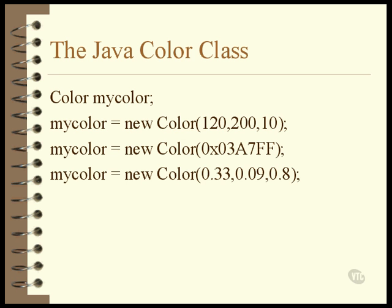The three RGB values can also be expressed as relative intensities in the form of floating point numbers between the range of 0 and 1. The decimal value of 1 is the same as the integer value of 255. Half intensity for a primary color would be 0.5.